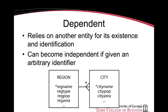Dependent entities, on the other hand, rely on another entity for their existence and identification. They can become independent if they are given an identifier or a primary key. In this case, region name is part of the composite primary key of city. If one gave city its own identifier, then city would become an independent entity as well.